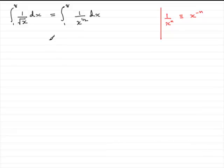OK, so what we need to do is change this integral into that format. So we've got the integral from 1 to 8 of x to the power minus a half to be integrated with respect to x.